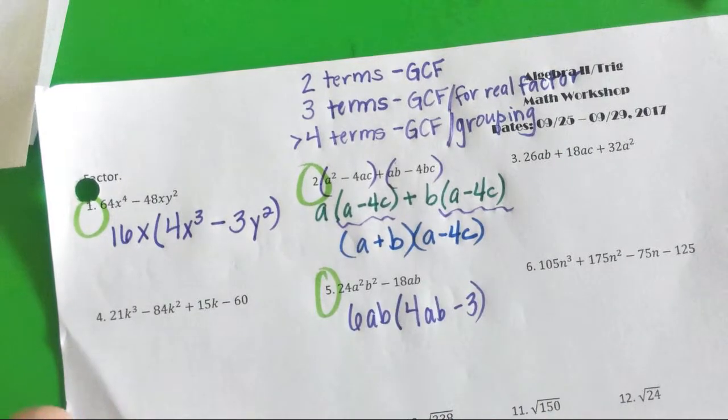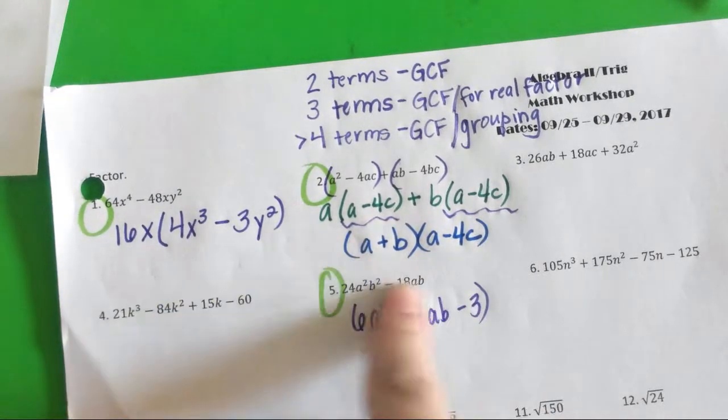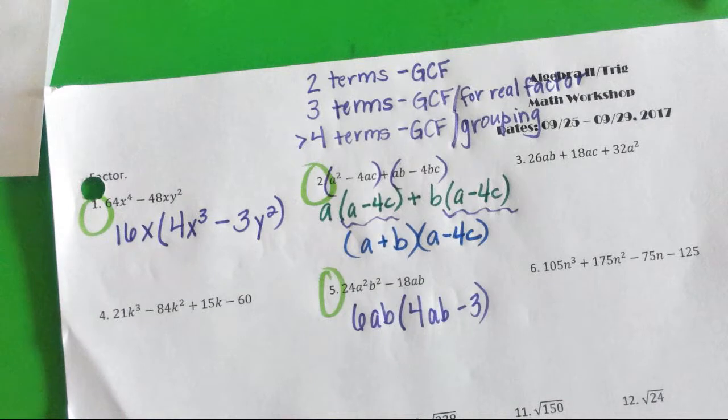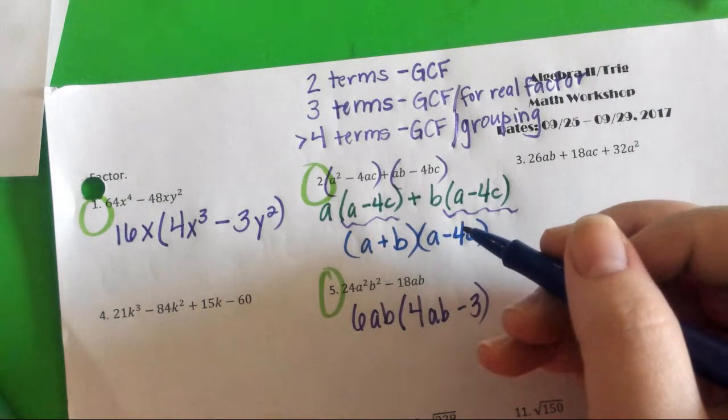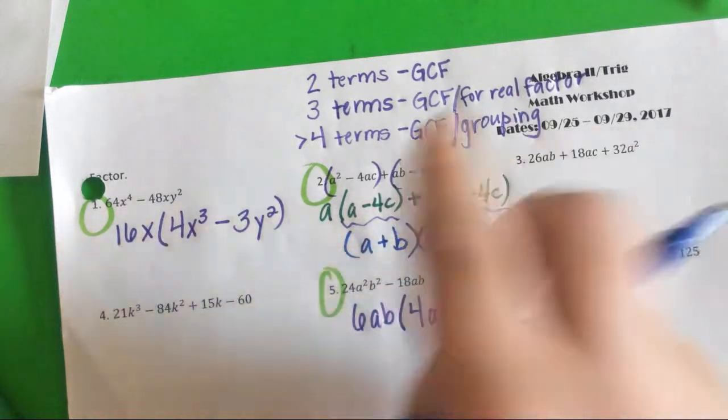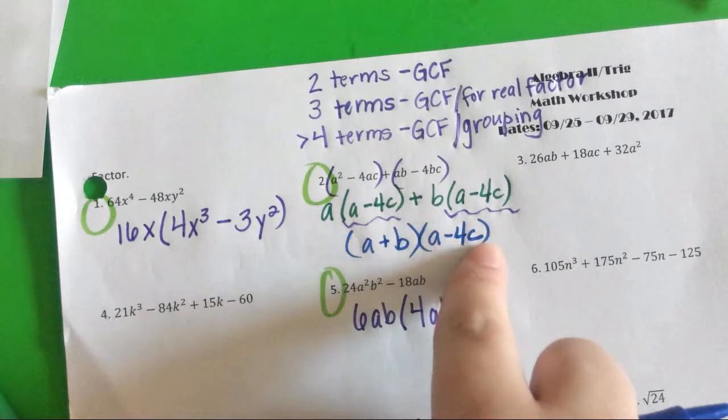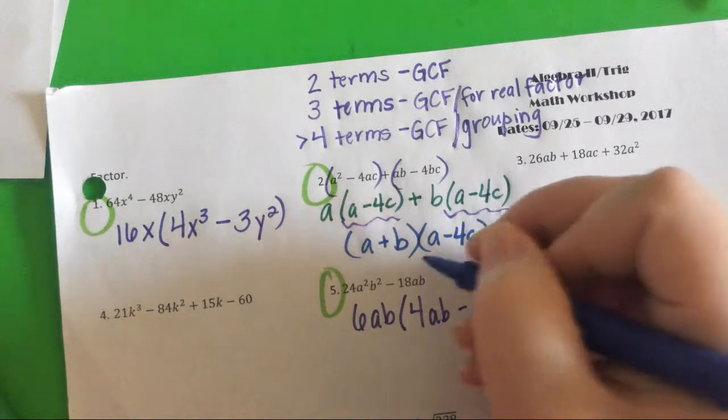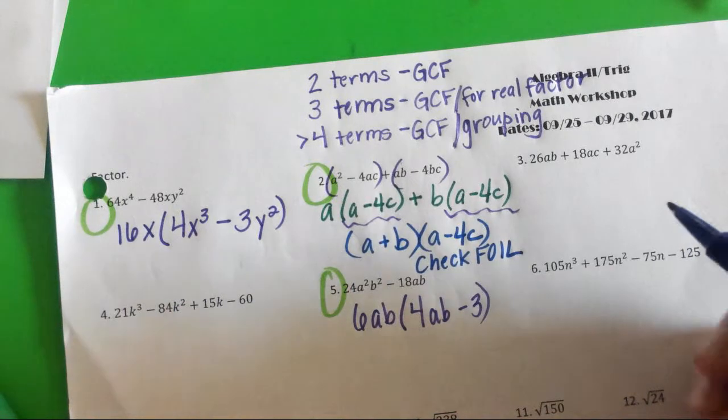From here, we wanted to check ourselves, because you're questioning your sanity, because it happens to the best of us. How could you check yourself with this problem? You could distribute, and you can have a point for that. But there's a fancy term for when we distribute with two binomials. We're going to FOIL. So we could actually FOIL it out and see if we ended up back at our original. I bet we would. A^2 - 4AC + AB - 4BC. Yes, we would.